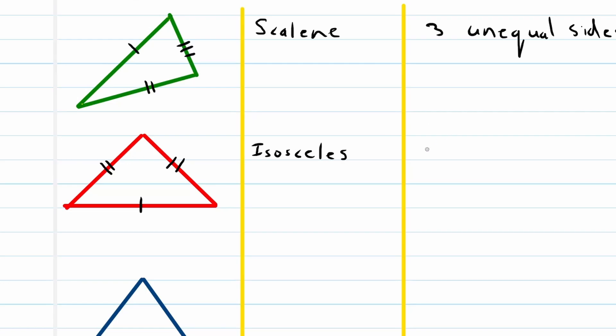Two equal sides. So the first one is a scalene - three unequal sides, very important, unequal sides. And the second one is isosceles - two equal sides.